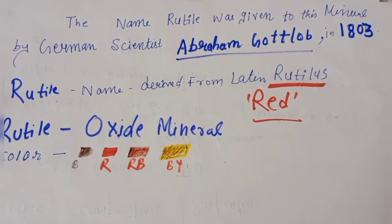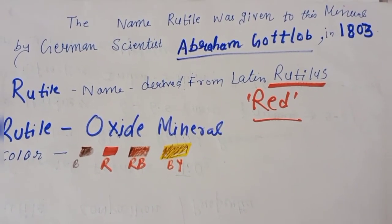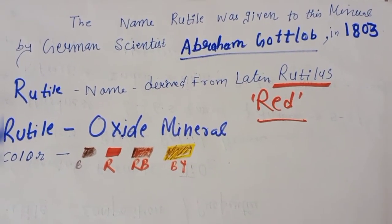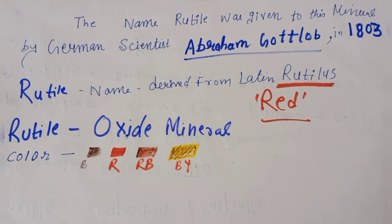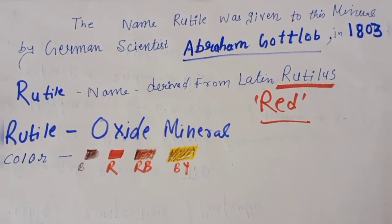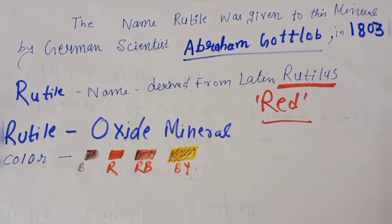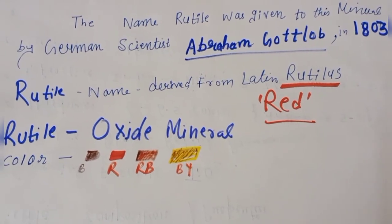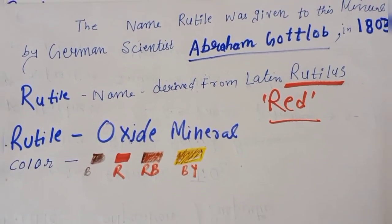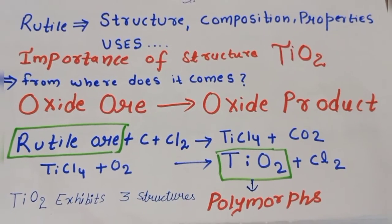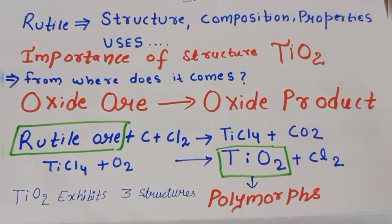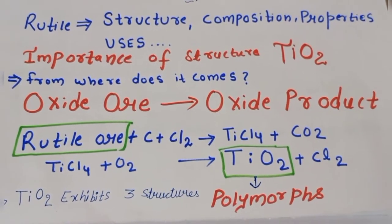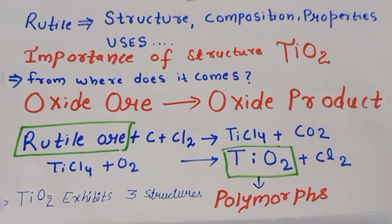The name rutile was given to the mineral by German scientist Abraham Gottlob in 1803. The name is derived from the Latin word 'rutilus', meaning red, as rutile minerals are reddish in color. The color can be brown, red, red-brown, yellow, or pale yellow. This video will cover the structure, composition, properties, and uses of rutile.